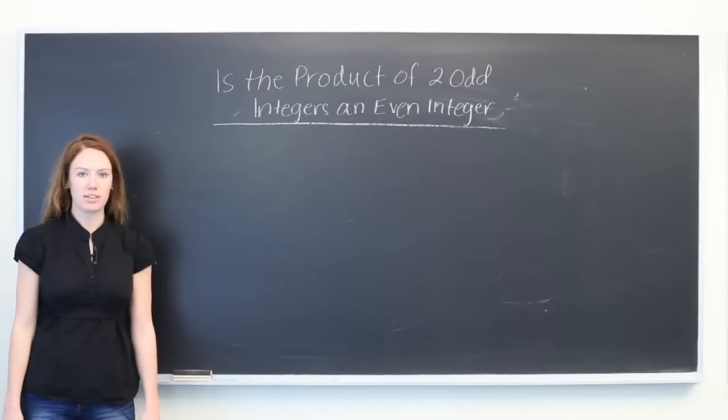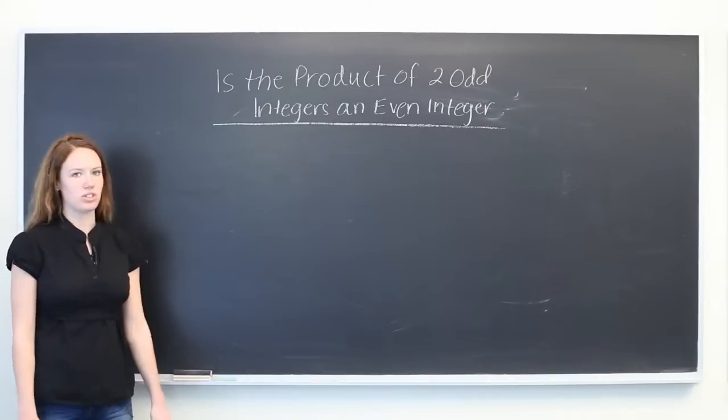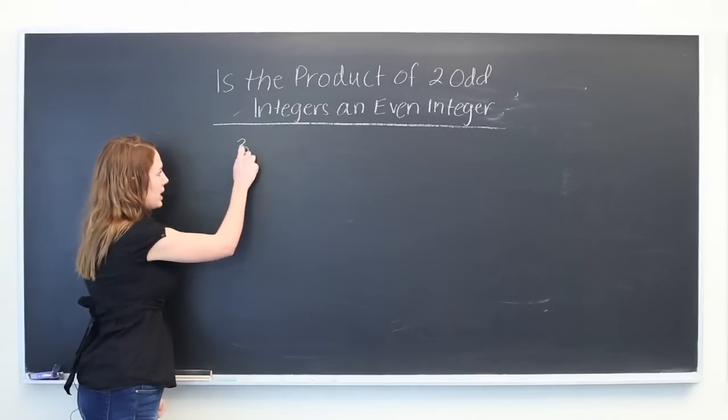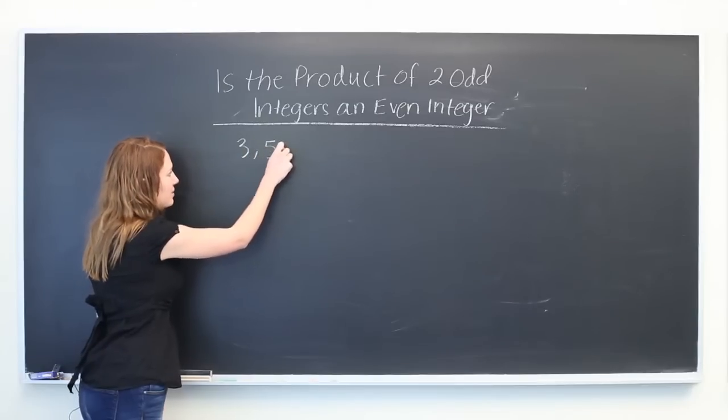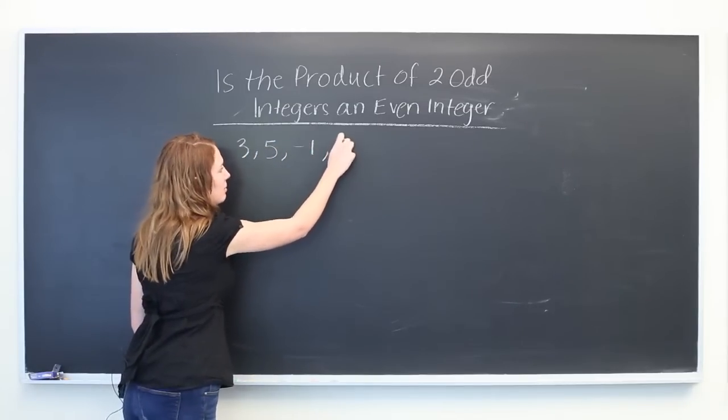When we see the word product we know that we're going to be multiplying two odd integers, so values such as 3, 5, minus 1, minus 7.